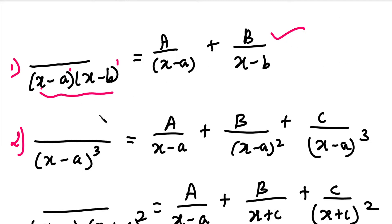The second type is when the denominator has a repeated factor — that is, (x plus a) to the power 2, power 3, or power 4. These are repeated linear factors.